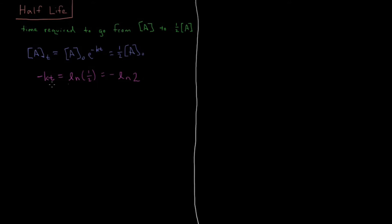So we've got minus KT equals minus log of two. We can flip the sign on both sides, so we have KT equals the natural log of two. Dividing both sides by K, our half-life T-half for a first-order reaction equals the natural log of two divided by the rate constant.